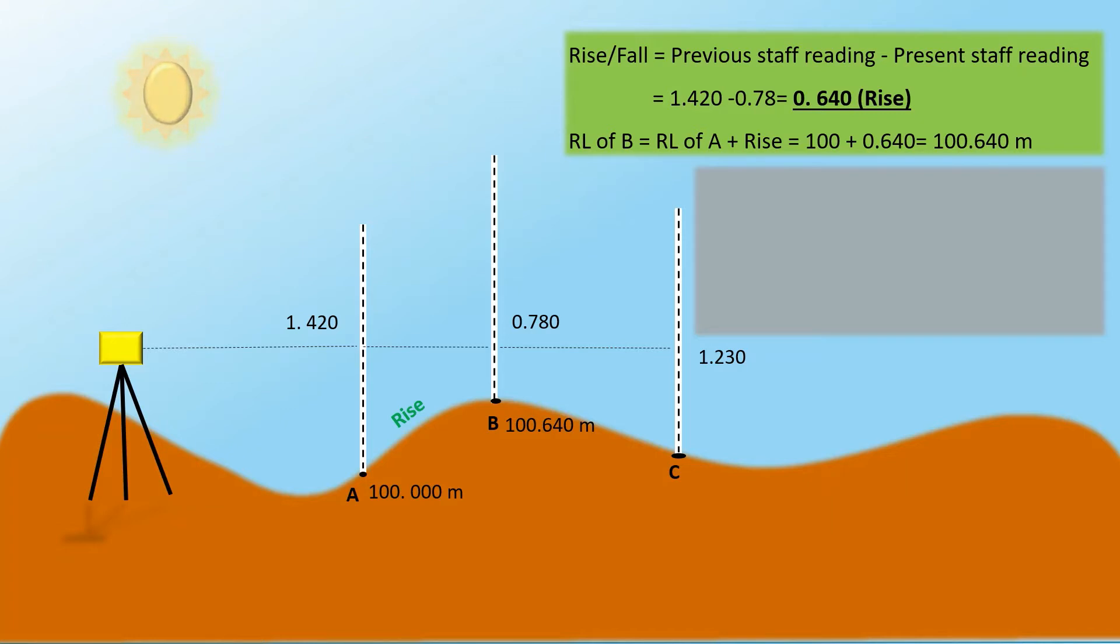As indicated above, rise or fall is equal to previous staff reading minus present staff reading. So 0.78 minus 1.23 gives minus 0.45 which is a fall. It is also evident from the figure that when you move from B to C ground level decreases. Hence RL of C is equal to RL of B minus fall which gives you 100.190 meters.